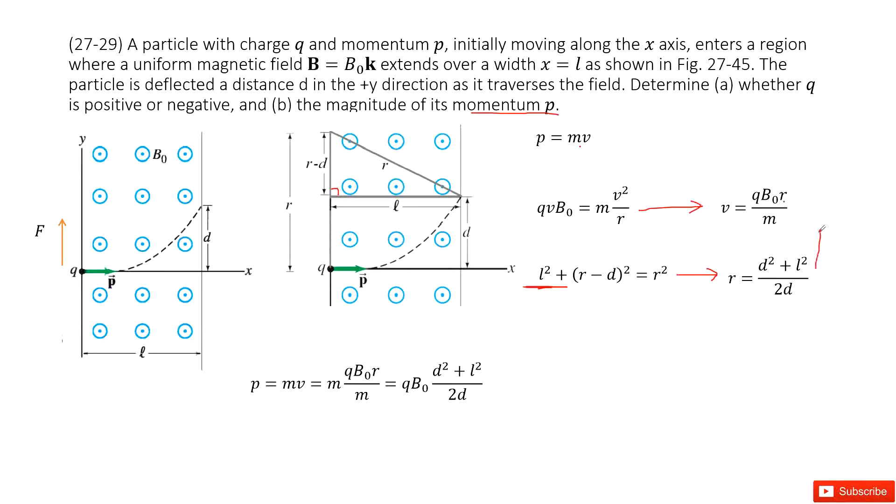Now you can see you input r in this one. You get the v. And then input v in this momentum. You get it there. So now you can see v is q B_0 times r divided by mass. R is d squared plus l squared divided by 2d. Thank you.